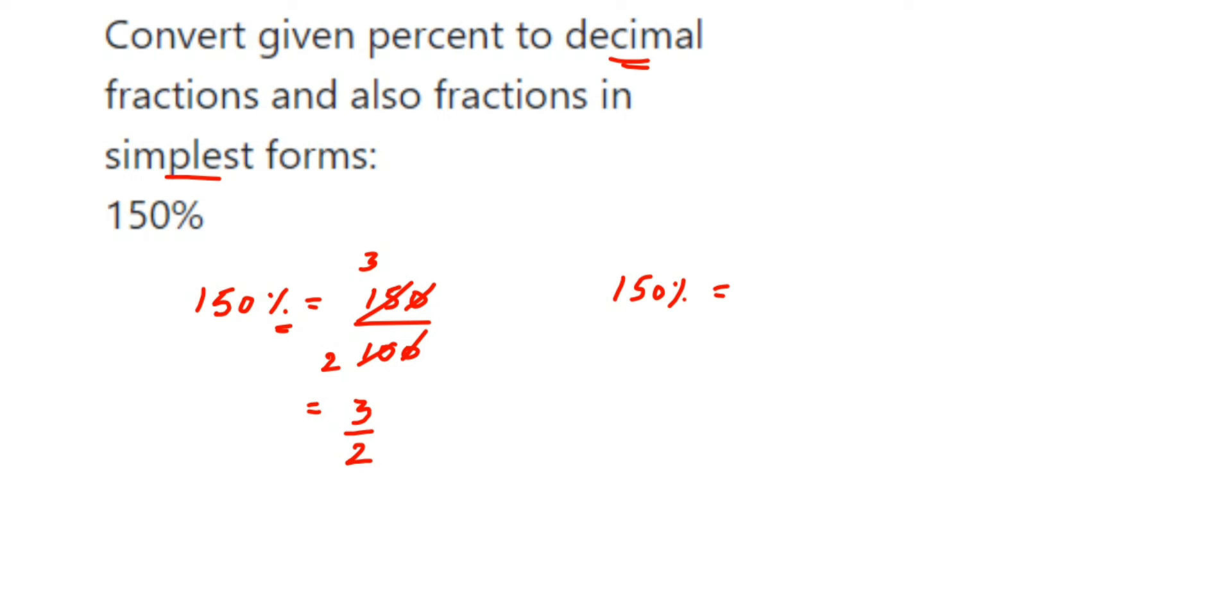Like I said before, 150 percent can be written as 150 upon 100. Now here I'll not gonna cancel it. So in lower classes you have learned if in case you have zeros in denominator, zeros means like ten, hundred, thousand and so on, then you can easily convert this into decimal form.